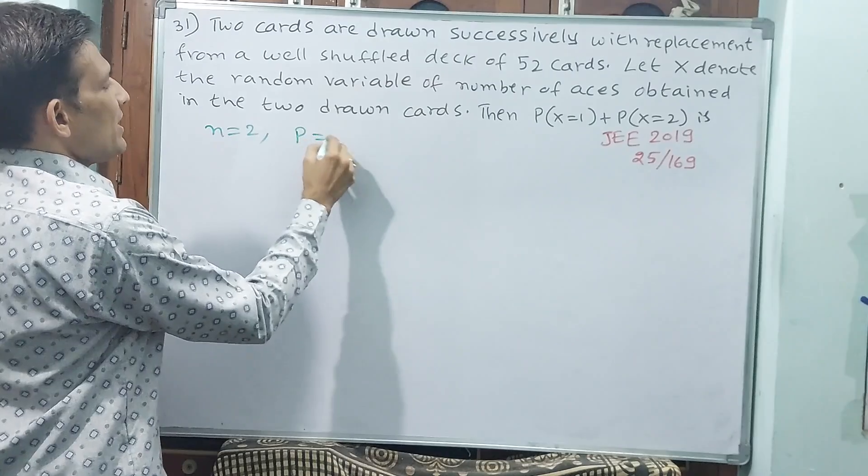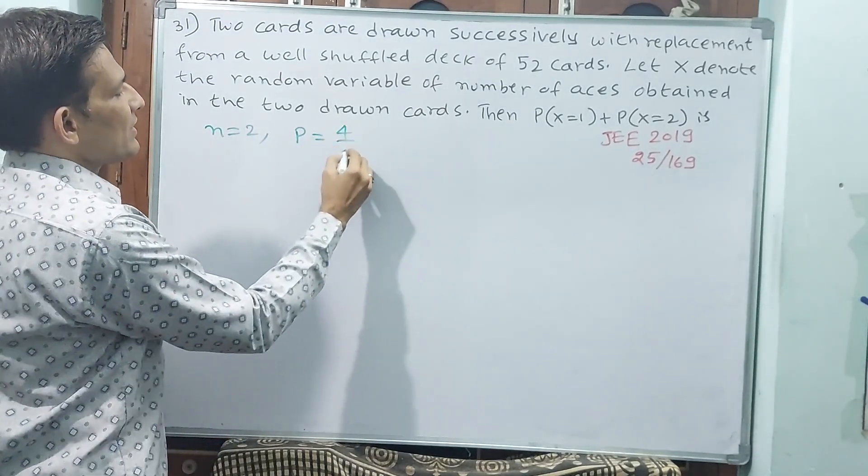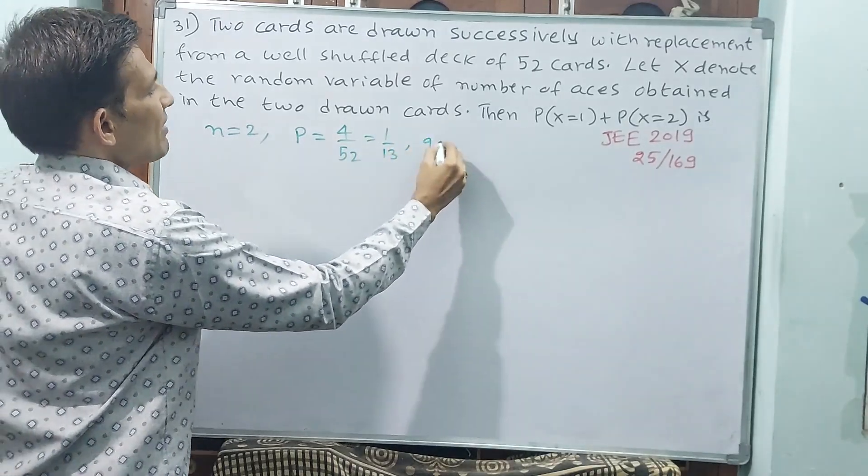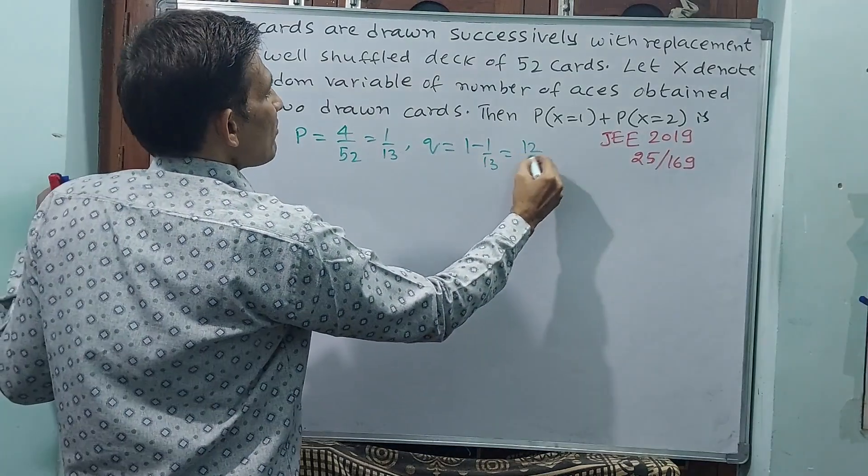And what is probability p? For getting an ace, four cards are there. Four aces from 52 cards, or else 1 by 13. Then what is q? 1 minus 1 by 13, which is 12 by 13.